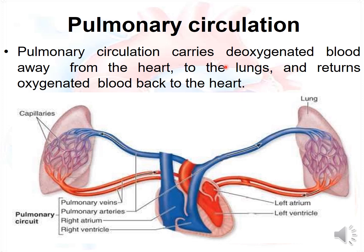Pulmonary circulation carries deoxygenated blood from the heart to the lungs and returns oxygenated blood back to the heart. The function of pulmonary circulation is to carry deoxygenated blood to the lungs, make it oxygenated, and return it to the heart. The pulmonary circuit consists of pulmonary veins, pulmonary arteries, right atrium, and right ventricle.